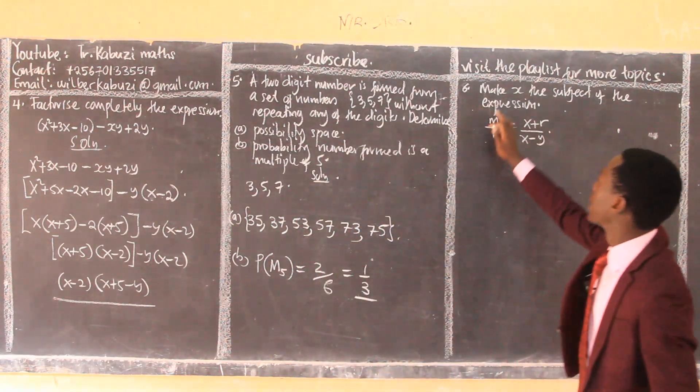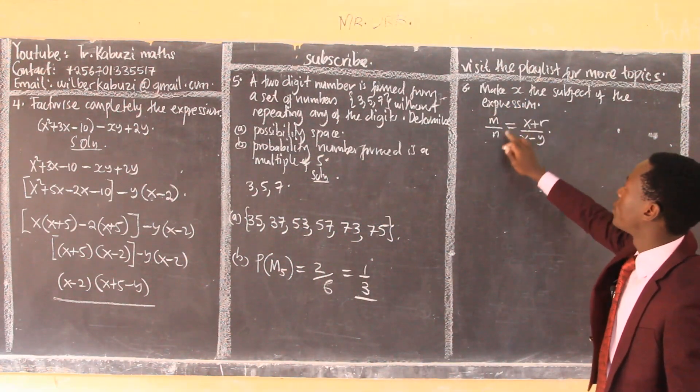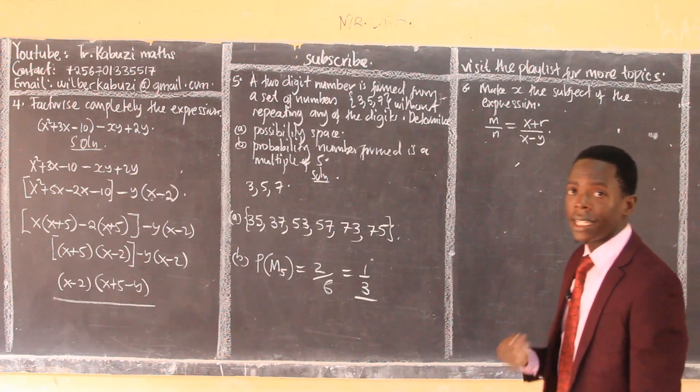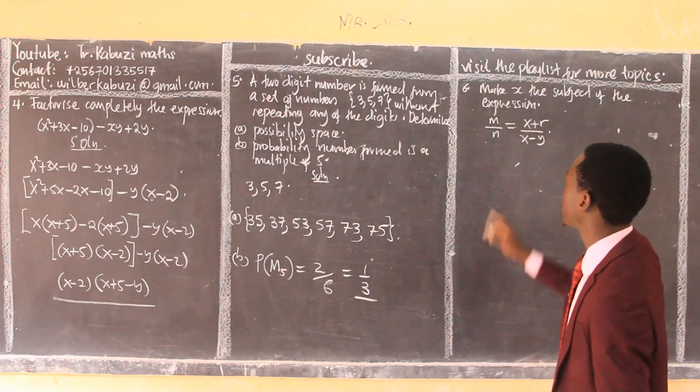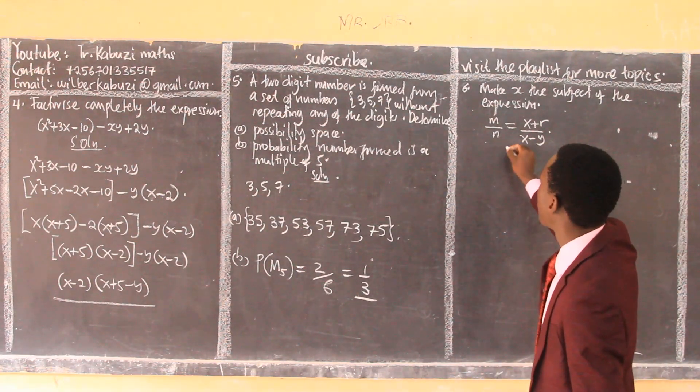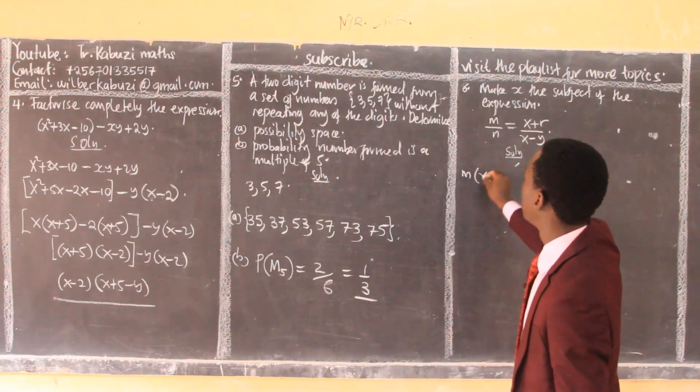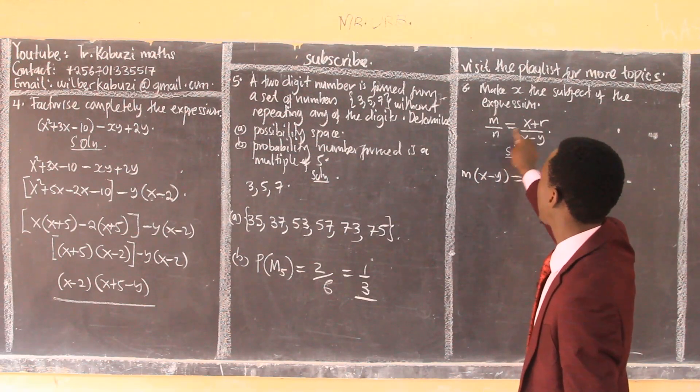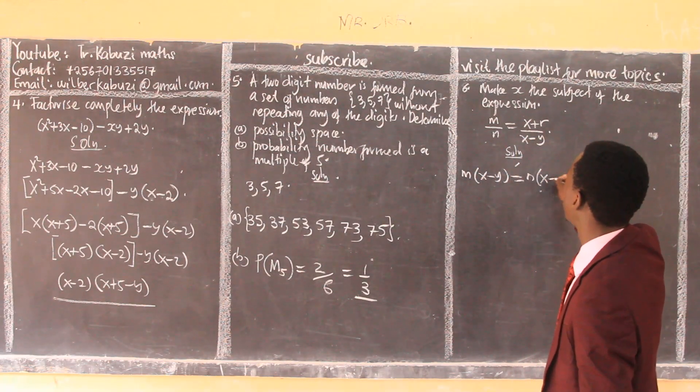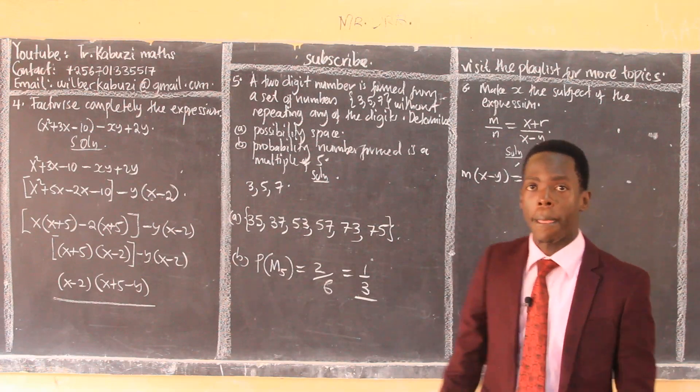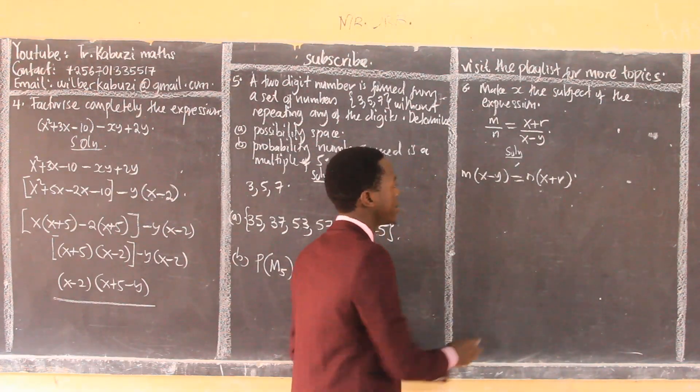Then we come to algebra: make x the subject of the expression. Now we say that in case we have any denominator, we start by cross-multiplying. So in my solution, I start by cross-multiplying by 2, so we have m equals 2n times (2x plus r). From there, I open brackets to get...